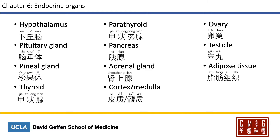Let's talk about the organs first. Hypothalamus is 下丘脑. The thalamus is 丘脑. Pituitary gland is 脑垂体 — 垂 meaning dangle, so 脑垂体 is just the stuff that dangles below the brain. The pineal gland is 松果体. Thyroid is 甲状腺. Parathyroid is 甲状旁腺. Pancreas is 胰腺. The adrenal gland is 肾上腺. The cortex and the medulla of the adrenal gland are 皮质 and 髓质. Ovary is 卵巢, and testicle is 睾丸.